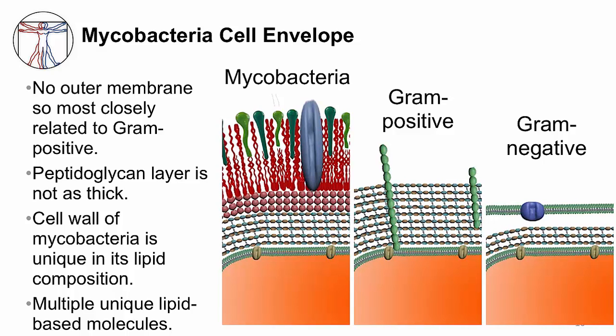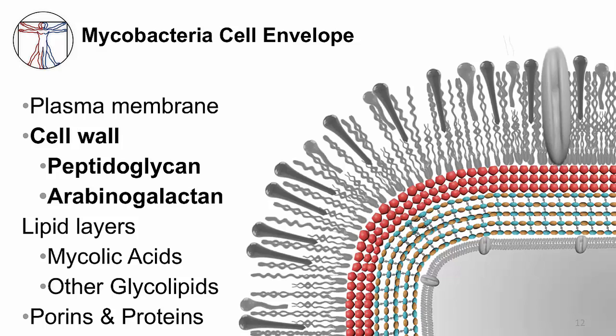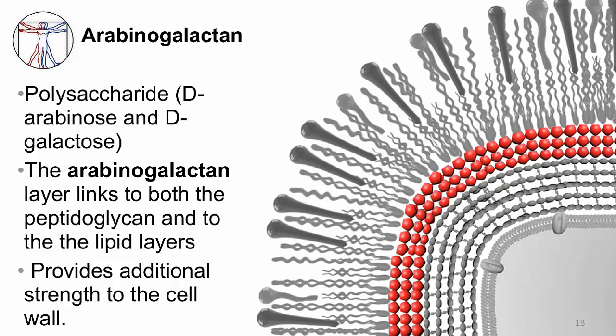Now let's discuss each layer of the mycobacteria cell envelope in more detail. The inner membrane, or plasma membrane, is consistent with all other bacteria. The mycobacteria cell wall is composed of peptidoglycan, but there's also another layer called arabinogalactan. Essentially, this is a layer of sugars — a polysaccharide polymer specifically made of D-arabinose and D-galactose. Arabinogalactan is linked to peptidoglycan and to the lipid layers, and this layer provides additional strength to the cell wall.